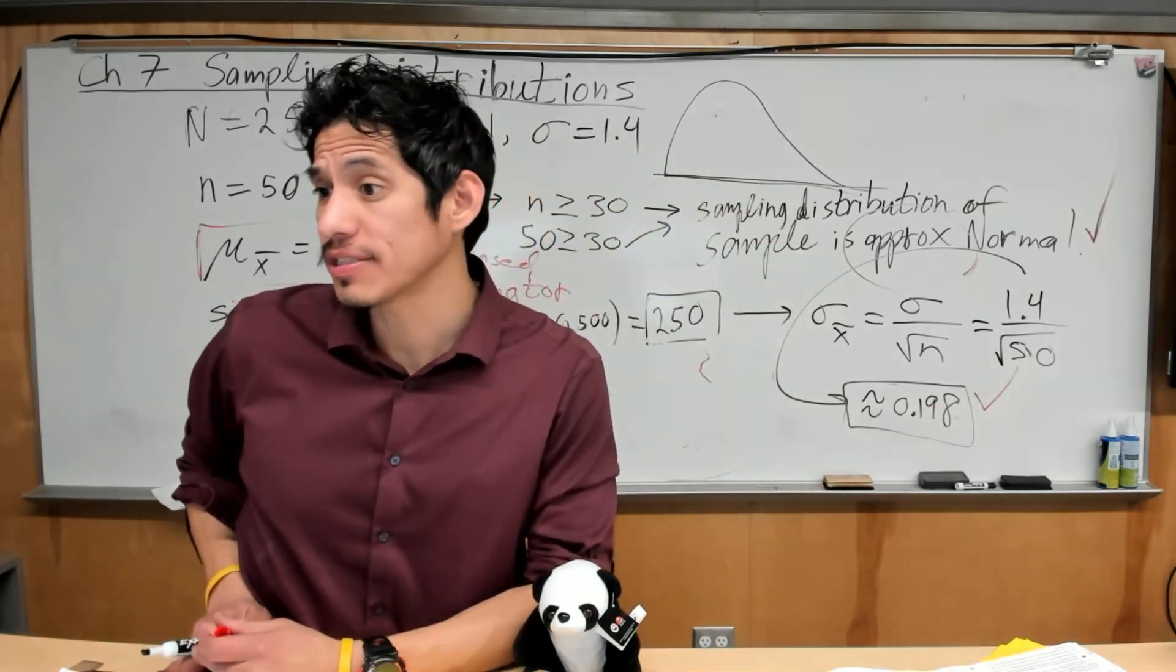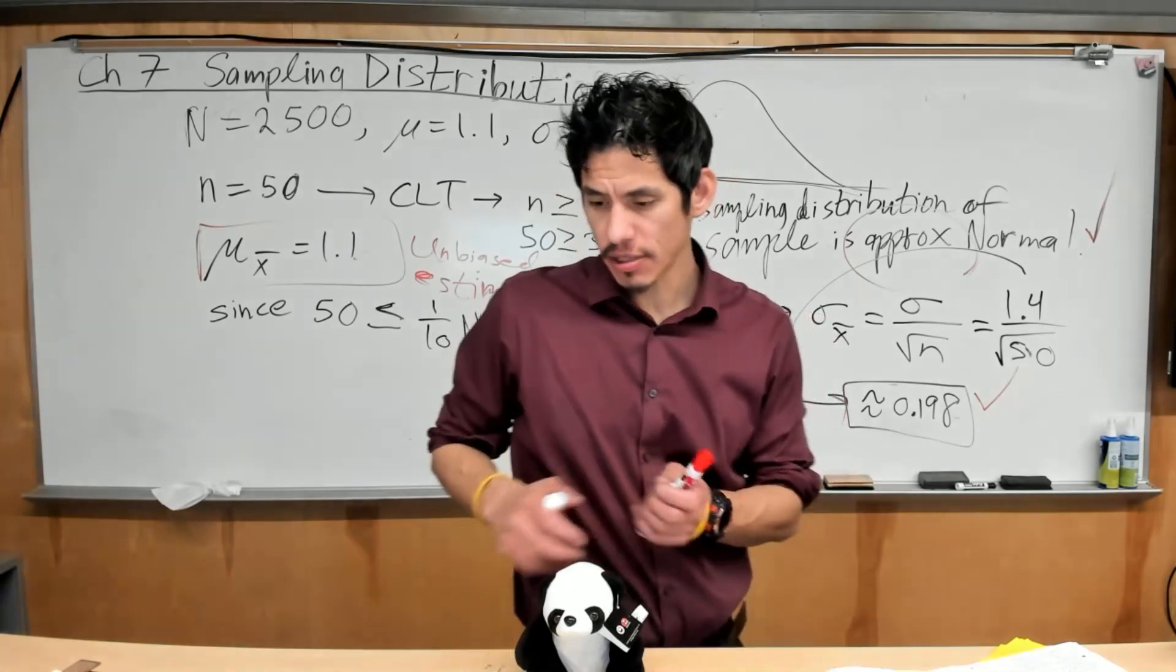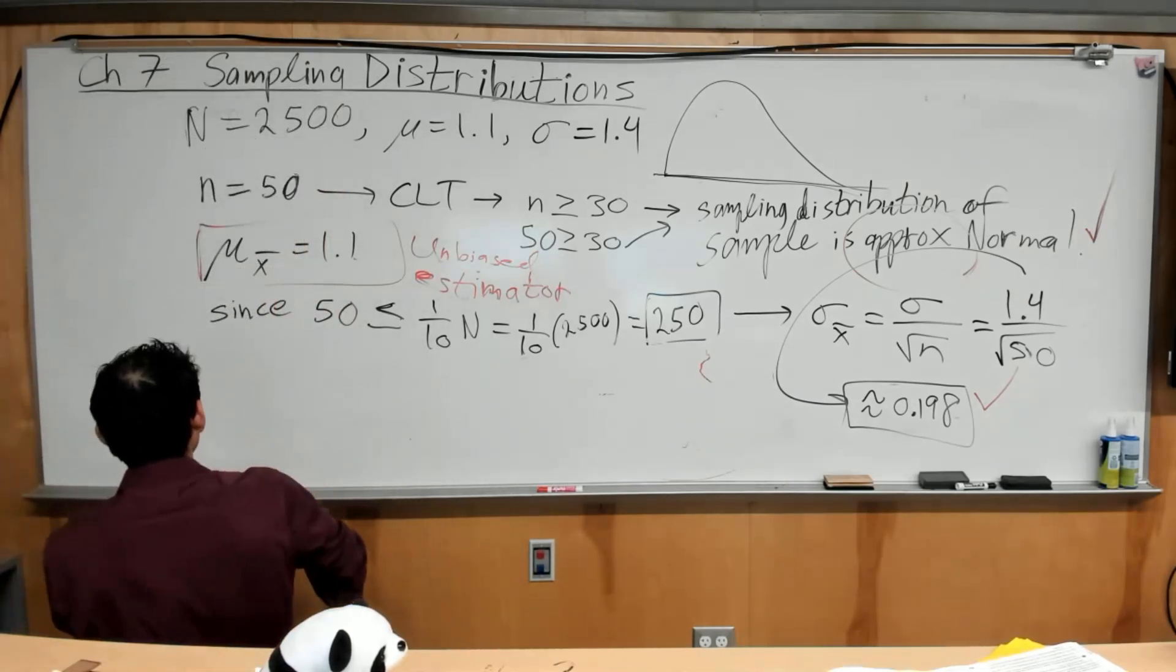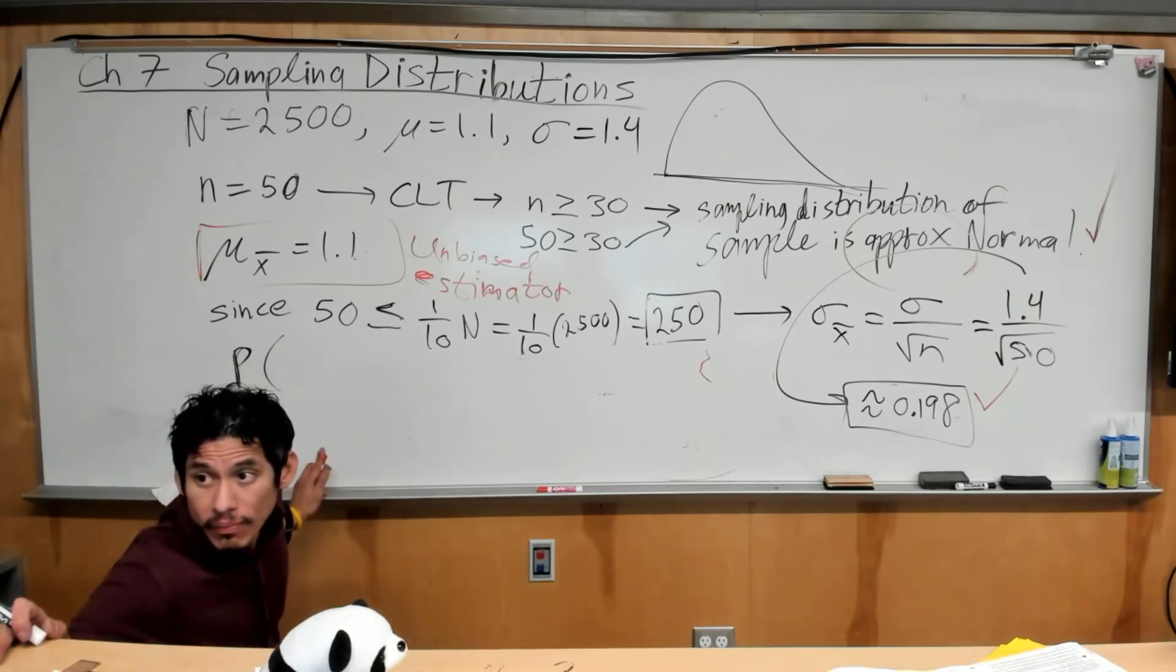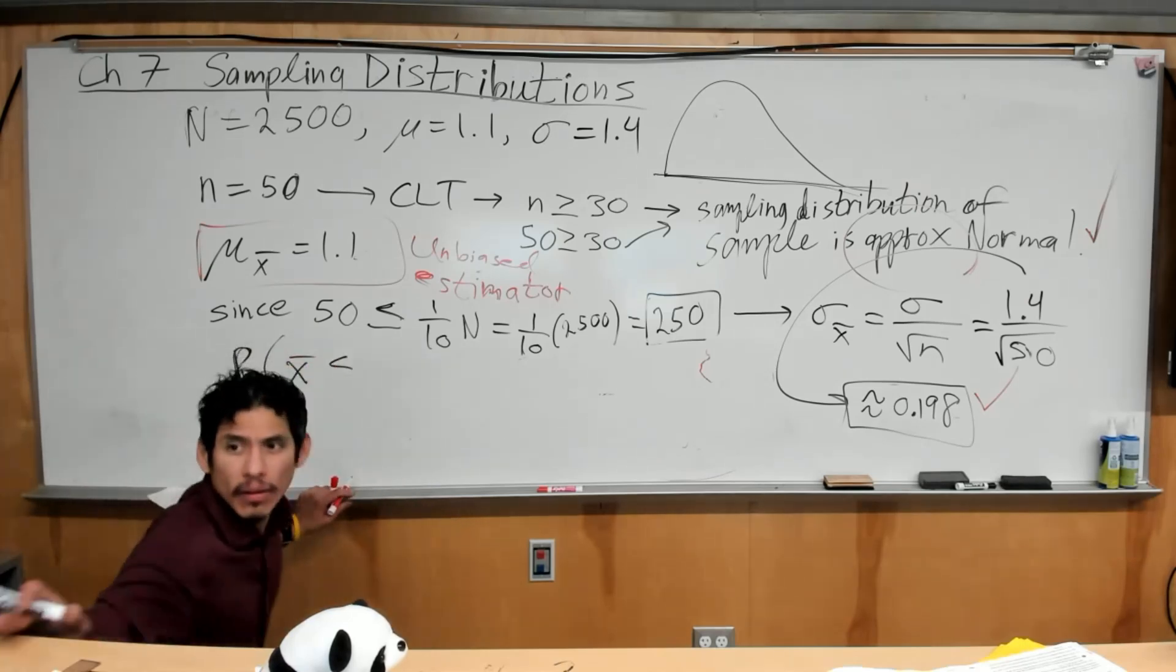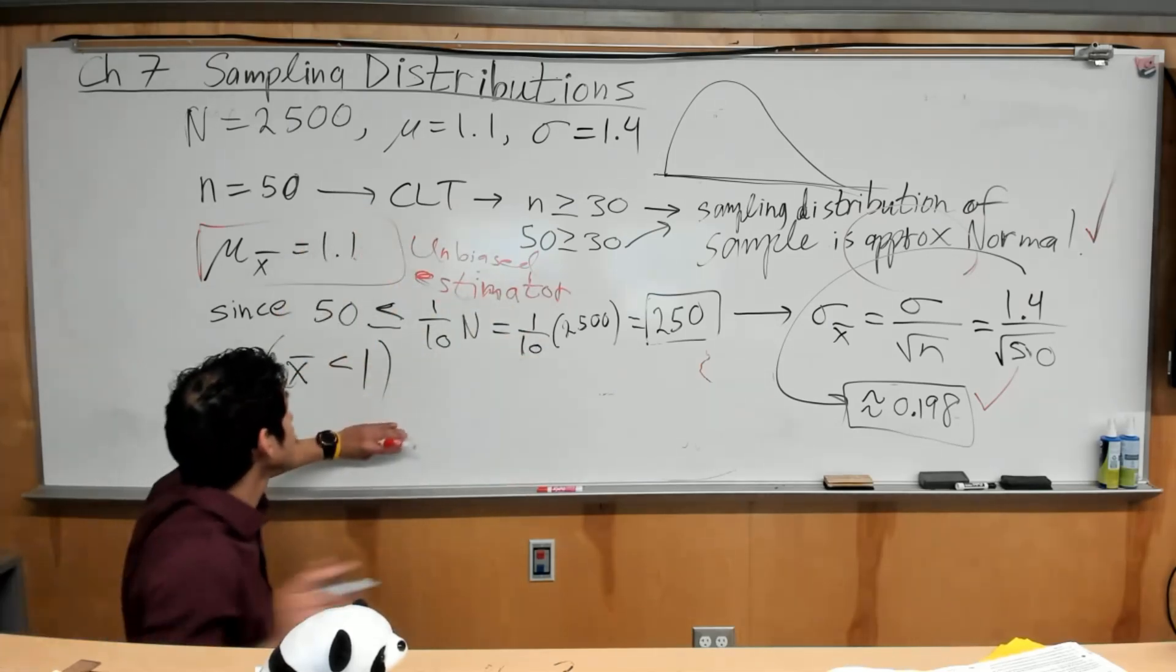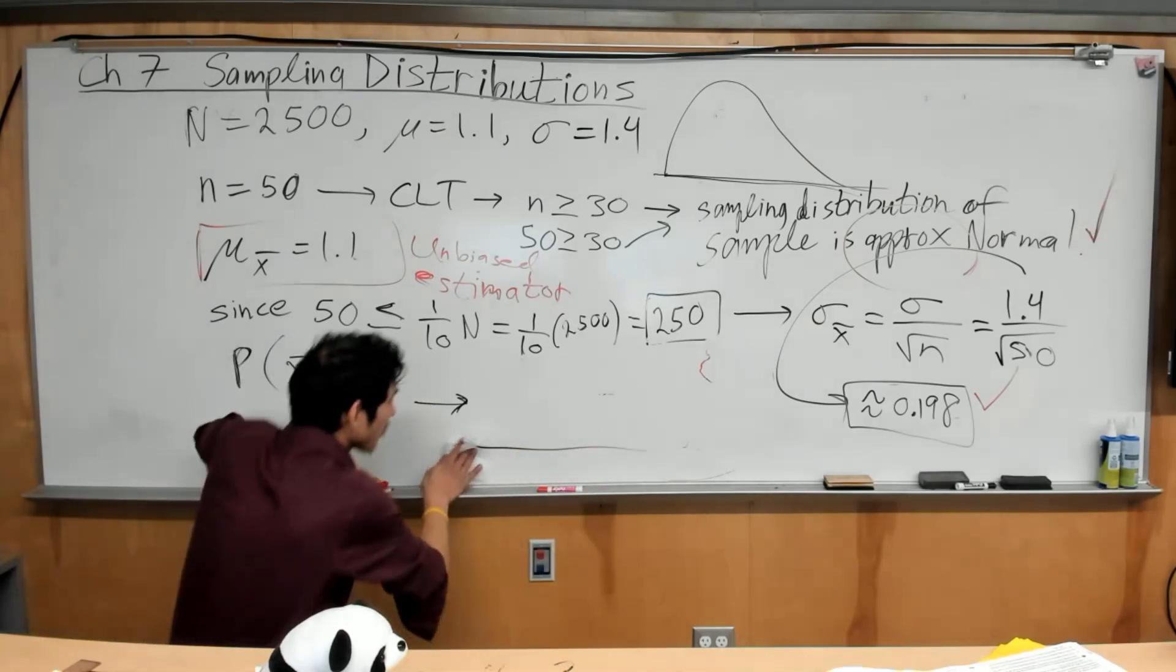Now, part C. What is the probability that the mean number of absences in a random sample for these students is less than 1? All right. Okay, so let's just do our calculation. You enjoy this, baby? This is hard. Don't worry, you got it. You can do this, right? So the probability that the mean number of absences in a random sample, so x-bar is less than 1. Okay, so now we just use these parameters because we have this.